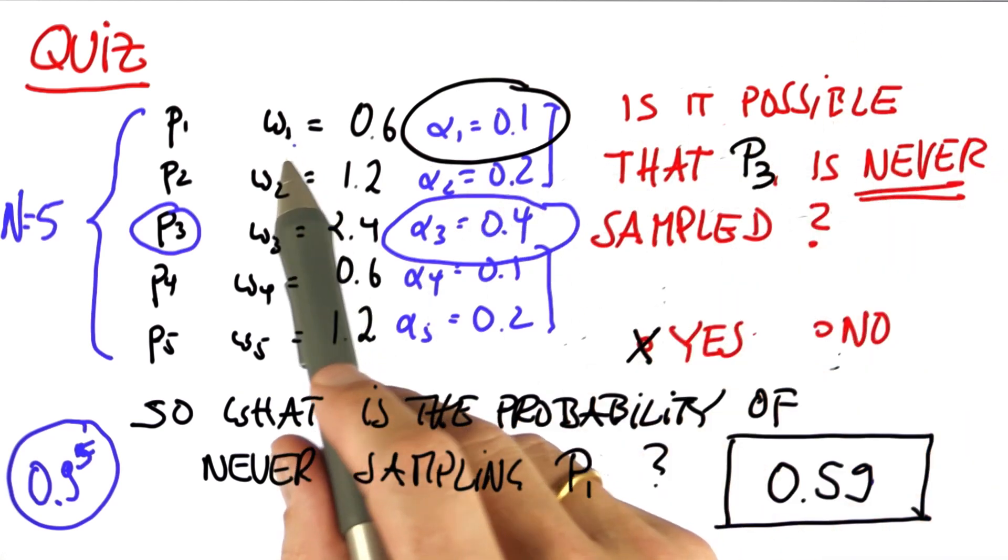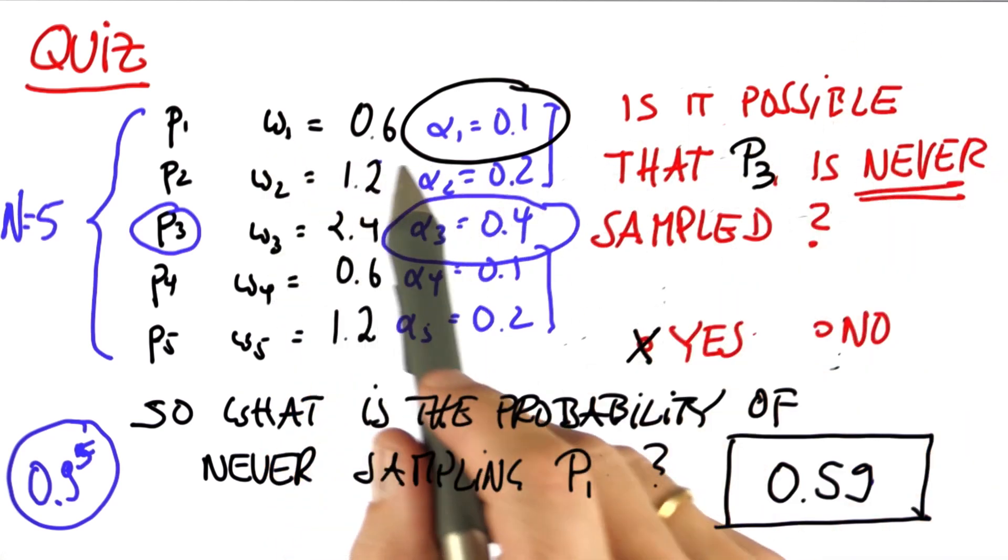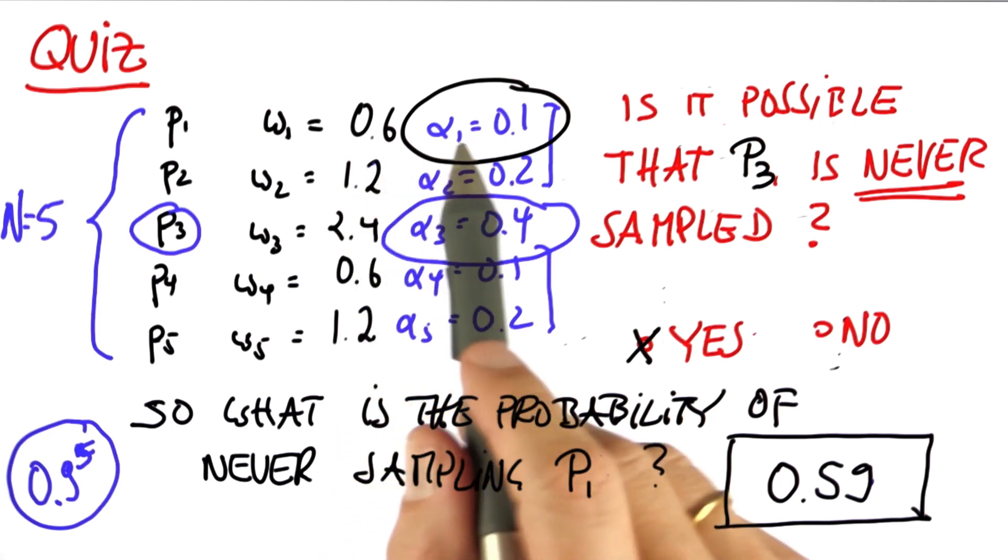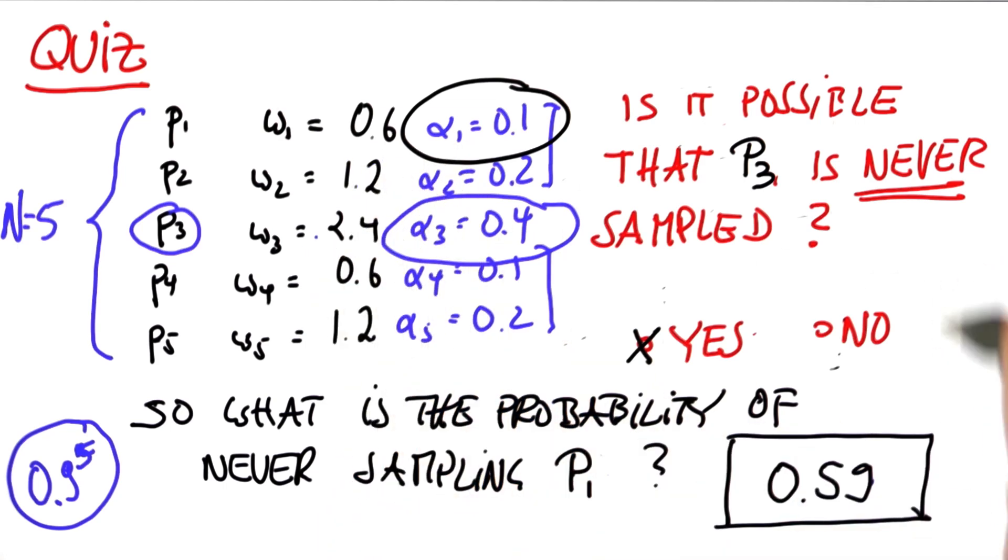Put differently, the particles with small importance rates will survive at a much lower rate than the ones with larger importance rates, which is exactly what we wish to get from the resampling step.